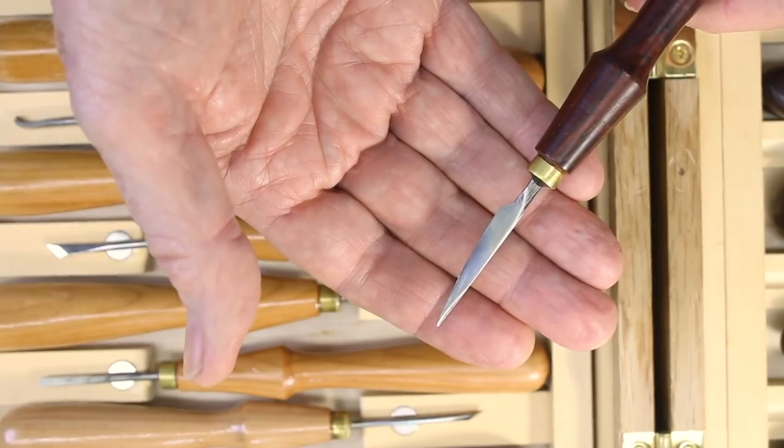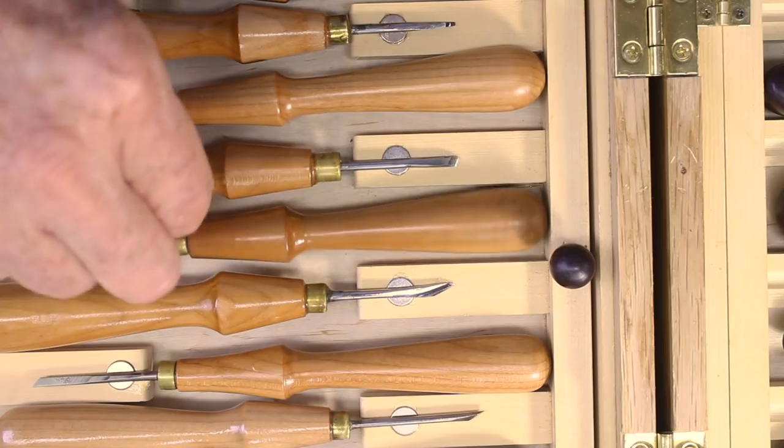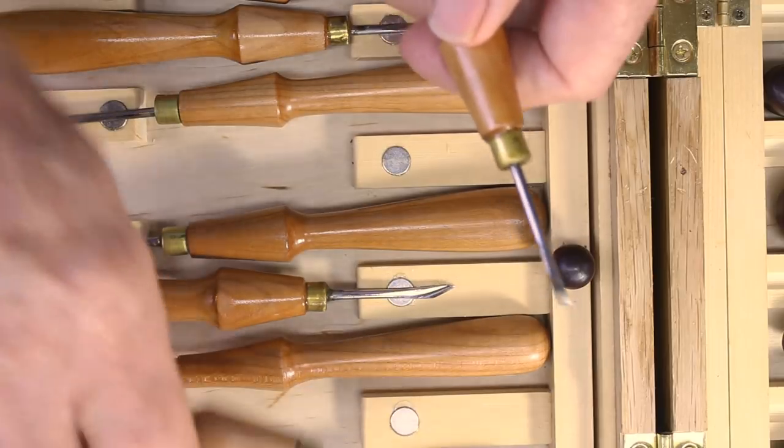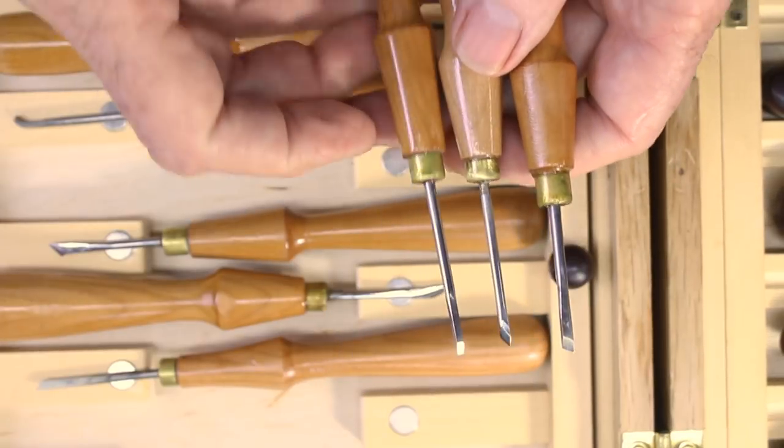Very small chisels, knives, and gouges suitable for highly detailed carving, inlay, and other precision woodworking are hard to find and often either expensive or of shoddy quality.